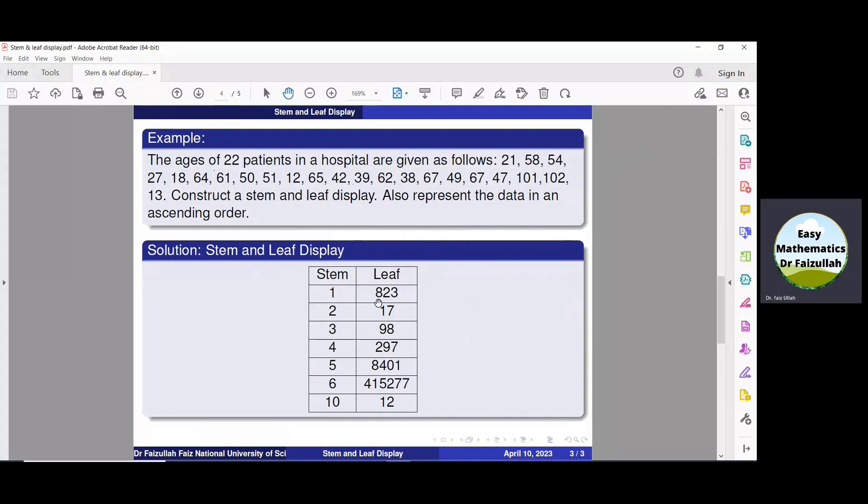So, now we can arrange this data in ascending order, from smallest to largest. So 12, 13, 18, we write it here. Then 21, 27, we write it here. 38, 39, we write it here, and so on. That's all.